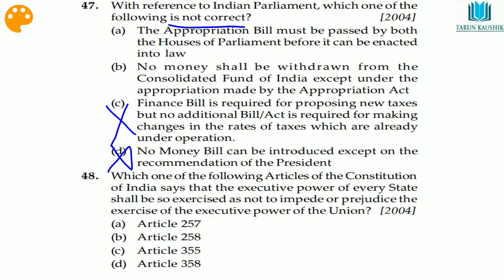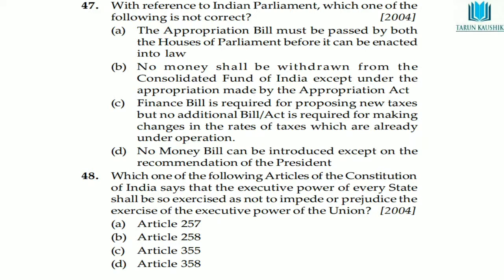Option C: no money shall be withdrawn from the Consolidated Fund of India except under the appropriation made by the Appropriation Act. The appropriation bill must be passed by both Houses of Parliament before it can be converted into law. It is not the case that it only needs to pass Lok Sabha; it must pass both Houses.